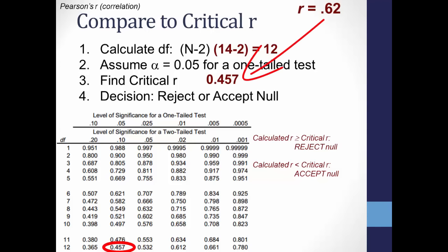In this case, 0.62 is greater than the 0.457 critical value, meaning that we reject the null in favor of the alternative hypothesis. We conclude that we're 95% sure that the number of hours studying for an exam does, in fact, positively correlate with scores on the exam.